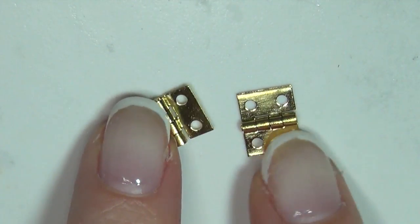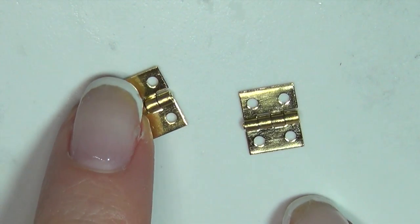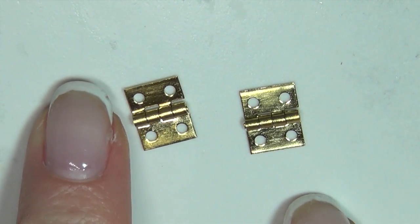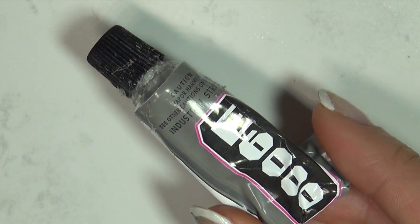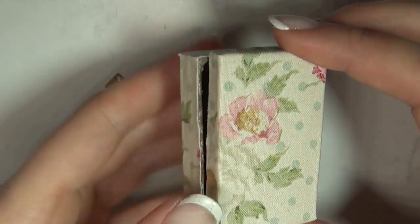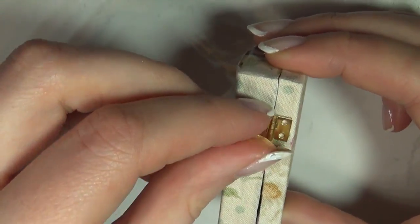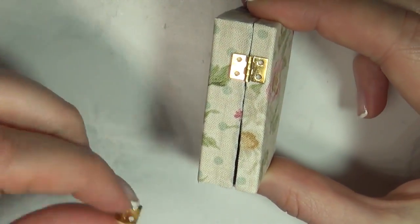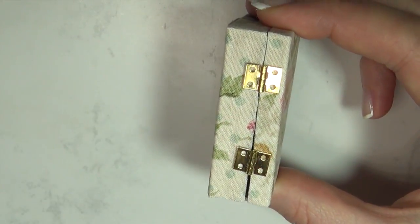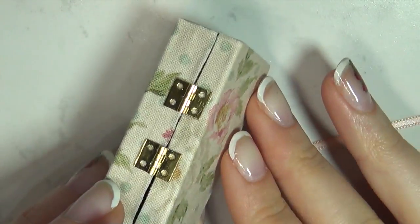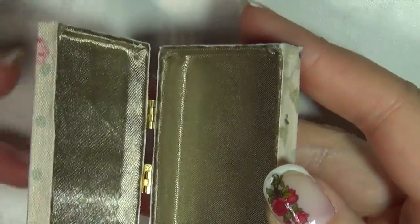To attach the front and back of the suitcase together you're going to need some hinges. I got these miniature doll size hinges from eBay and I used a strong glue to stick them on. And there you go! That's the basic suitcase.